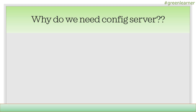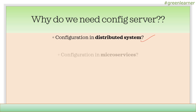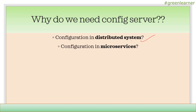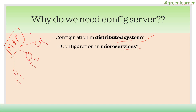First, why do we need Config Server? The configuration in a distributed system is pretty much important. When we are talking about distributed system, microservices come into picture. Microservices means the application is divided into small pieces - you have a big application and you are dividing it into small functionalities. Combined together, they make the application. So the main application makes calls to these services and performs the functions.